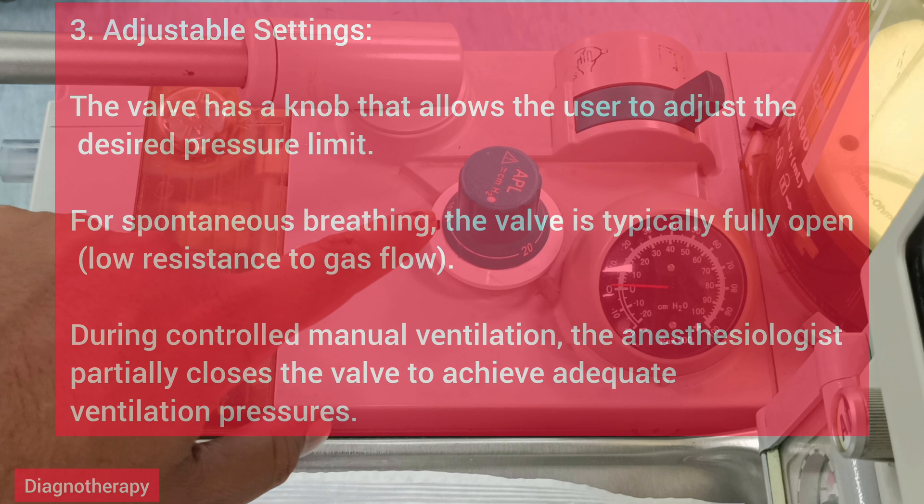Third is adjustable settings. The valve has a knob that allows the user to adjust the desired pressure limit. For spontaneous breathing, the valve is typically fully opened, offering low resistance to gas flow. During controlled manual ventilation, the anesthesiologist partially closes the valve to achieve adequate ventilation pressures.